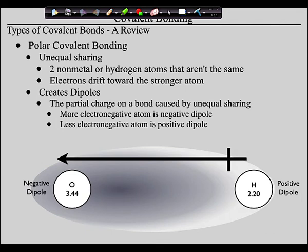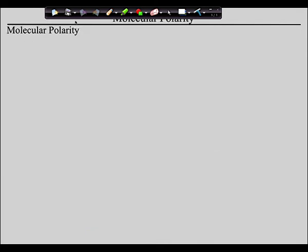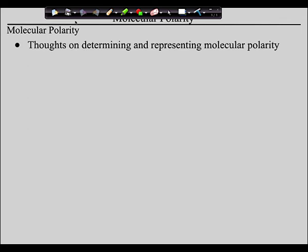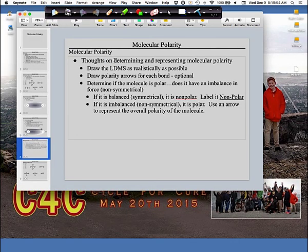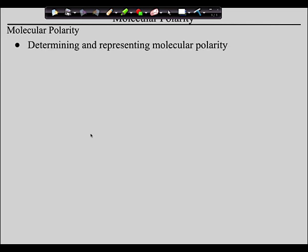Now we're going to apply these ideas to molecules. Here is the way to do it — determining and representing molecular polarities. First, draw the Lewis dot structure as realistically as possible. How do you know what these realistically look like? You know the molecular geometries from the last unit. If something is trigonal planar, make it look trigonal planar. If something is bent, make it look bent. If something is linear, make it look linear.